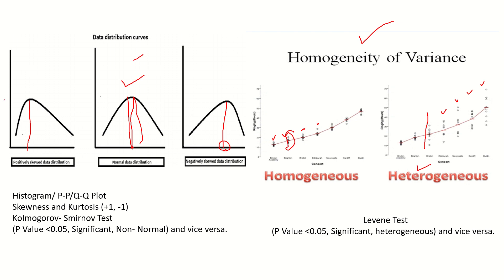To check the normality of distribution, we can use a histogram, PP plot, or QQ plot. We can also check skewness and kurtosis — if the values fall between plus one and minus one for both skewness and kurtosis, we conclude the data is normally distributed. Another test we can perform is the Kolmogorov-Smirnov test. For the K-S test, the p-value must be non-significant, meaning greater than 0.05, to conclude that the data is normal.